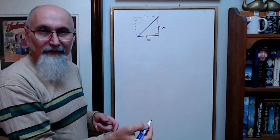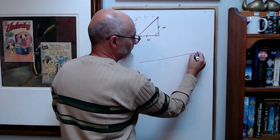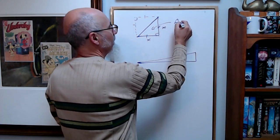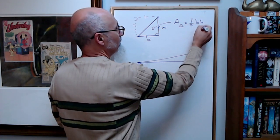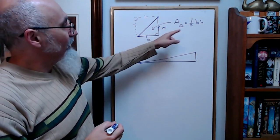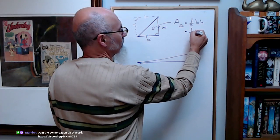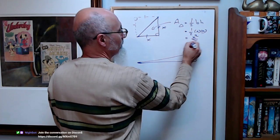But a triangle doesn't have to be an isosceles triangle. Here's a triangle, and the area of a triangle is one-half base times height. So for a square, the base and the height are just X, so this would be one over two X times X, so it equals X over two.